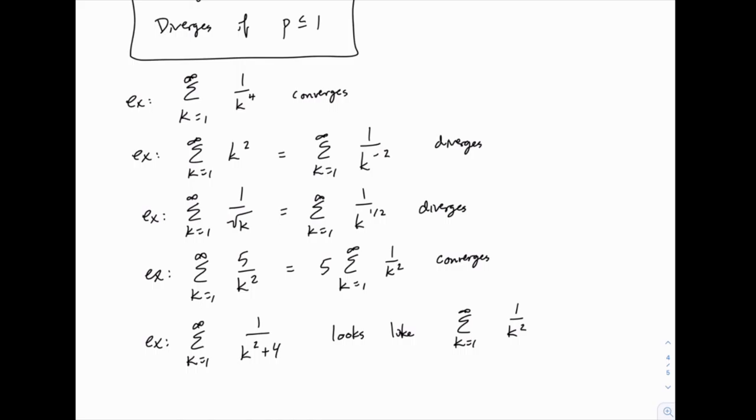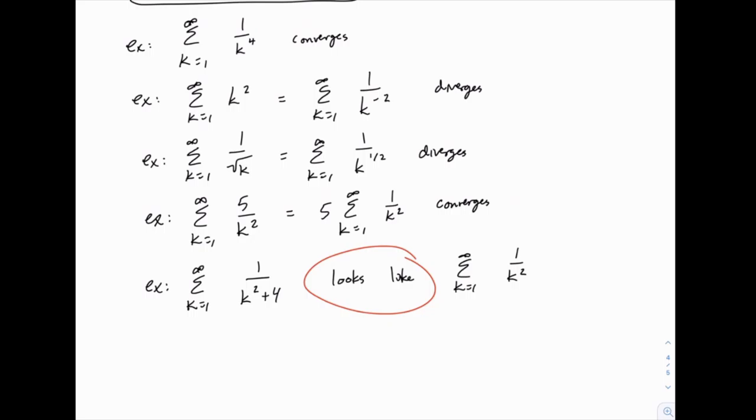But since this doesn't exactly fit the p-series form, we can't just apply the p-series test. But because it looks like it, because it fits that form, it turns out that we can take this one step further and use what is called a comparison test. We'll have two comparison tests we'll talk about. And we can compare 1 over k squared plus 4 to 1 over k squared, which we know the answer for because it's a really simple p-series. And then we can draw conclusions about 1 over k squared plus 4 using one of the comparison tests. So that's what we're going to get into next, is the two comparison tests. One's called the direct comparison test, and one is called the limit comparison test.